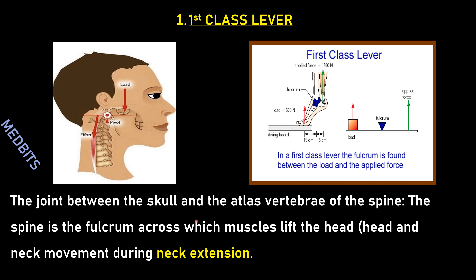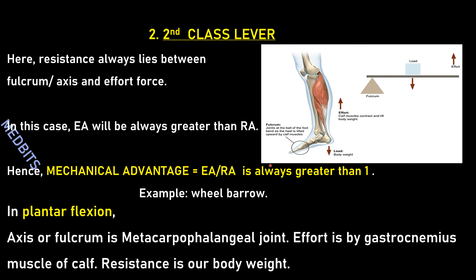The human example of a first class lever is the joint between the skull and the atlas vertebra of the spine — the atlas being the first vertebra closest to the skull. The spine acts as the fulcrum across which muscles lift the head. The effort pulls the head, and you can feel this during neck extension. This is head and neck movement during neck extension.